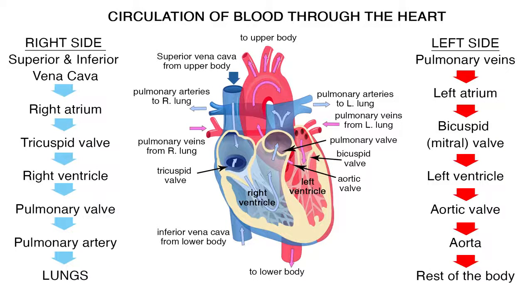On the left side of the heart, the oxygenated blood returns to the heart by way of the pulmonary vein. Blood enters the left atrium, flows through the bicuspid or mitral valve, and into the left ventricle. When the left ventricle contracts, blood goes through the aortic valve, into the aorta, and onto the rest of the body.